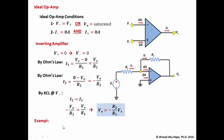Now let's do a numerical example. We want to design an inverting amplifier such that Vout equals negative 20 times Vs. This means the ratio R2 over R1 must equal 20. When choosing resistors, we must be careful to select values that make the op-amp behave as near-ideal. Good values are in the range of 1kΩ to 100kΩ.